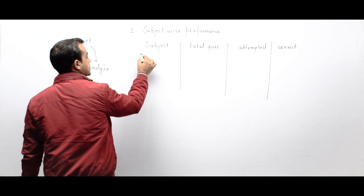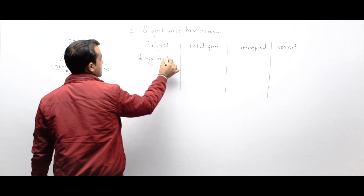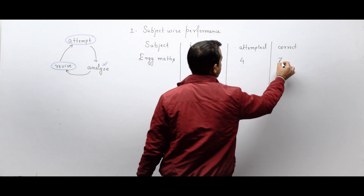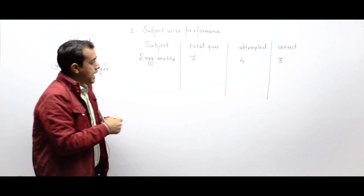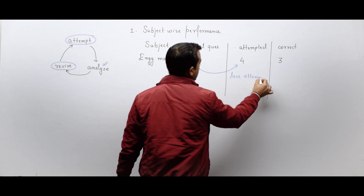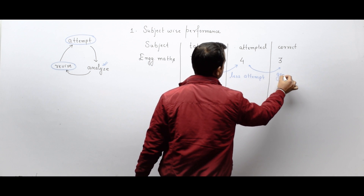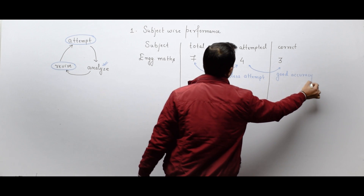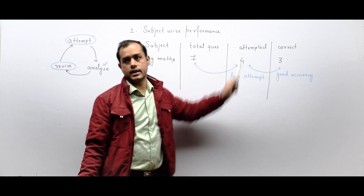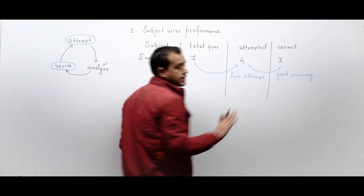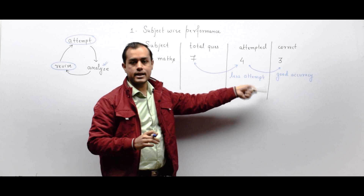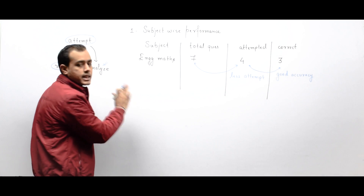Suppose the subject is engineering maths, which is common to most branches. Say seven questions were asked; I attempted four, out of which three were correct. Here, attempt is less but accuracy is good. We have to measure two things: out of total questions, how much were you able to attempt, and out of attempted, how many were correct. If accuracy is good, work on attempt; if attempt is good and accuracy is bad, work on accuracy. Make this table for every subject.